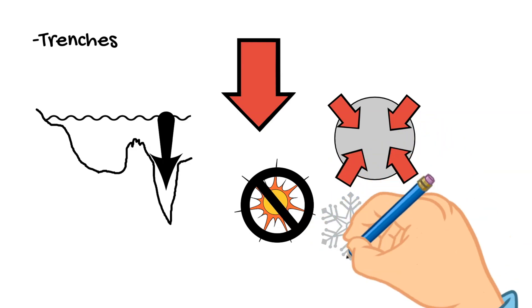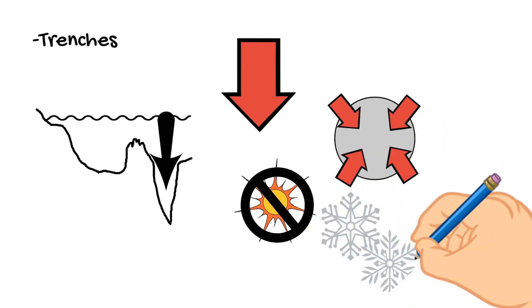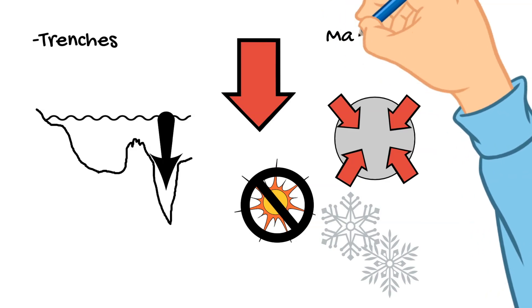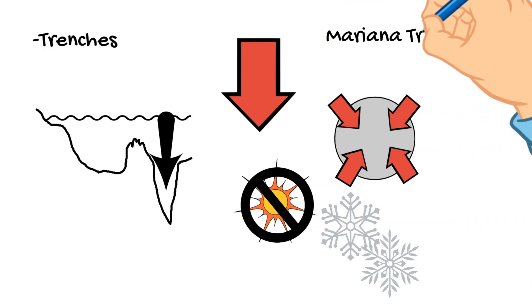An example of a trench would be the Mariana Trench. This is the deepest place in the ocean and reaches depths of 36,201 feet.